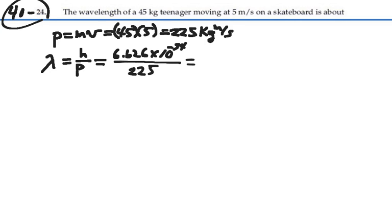And this is equal to 2.94 times 10 to the minus 36 meters. So that is the de Broglie wavelength of the teenager on the skateboard: 2.94 times 10 to the minus 36 meters.